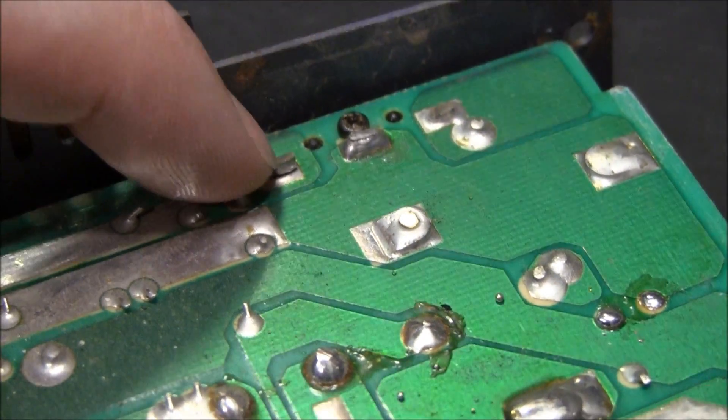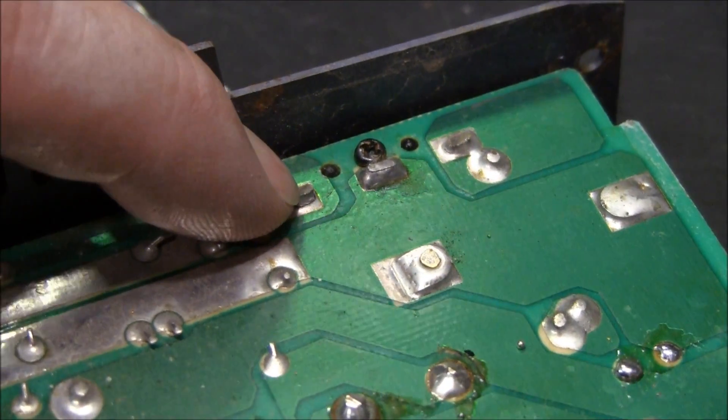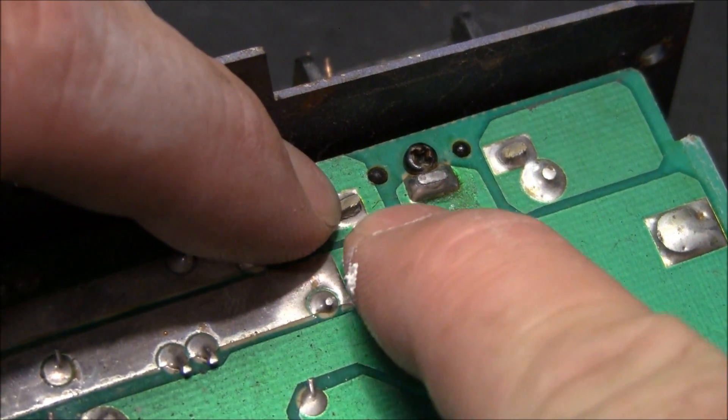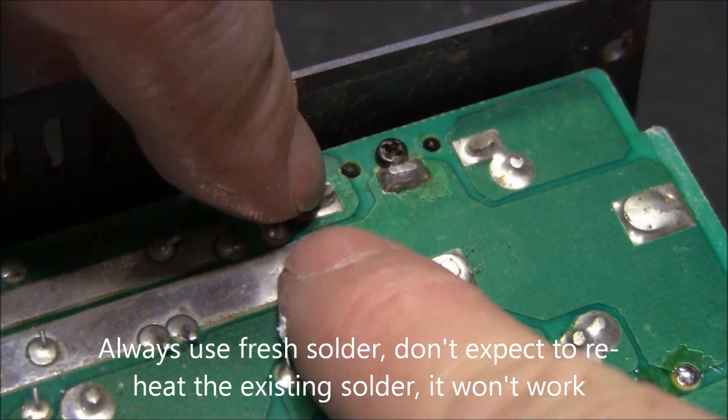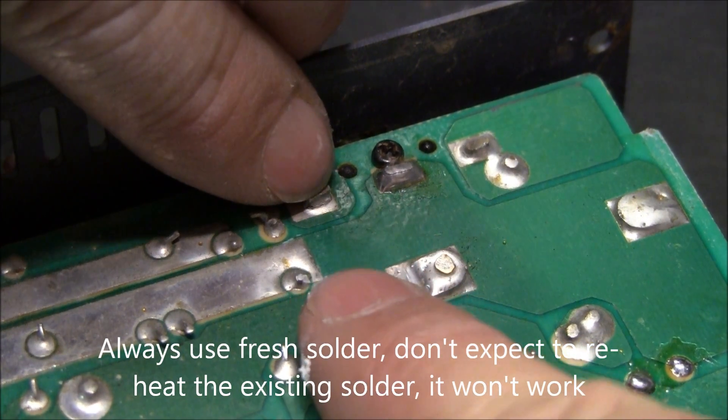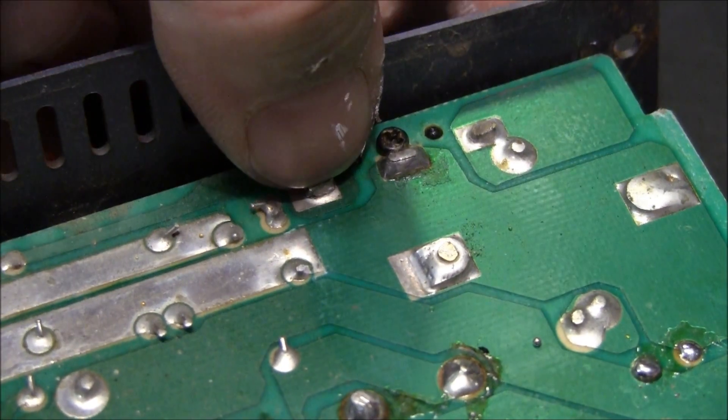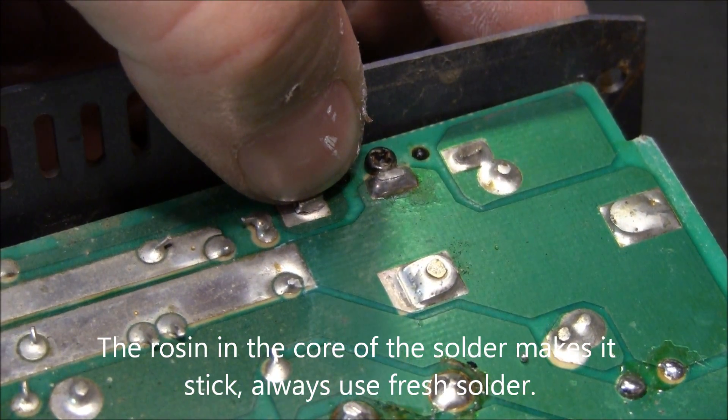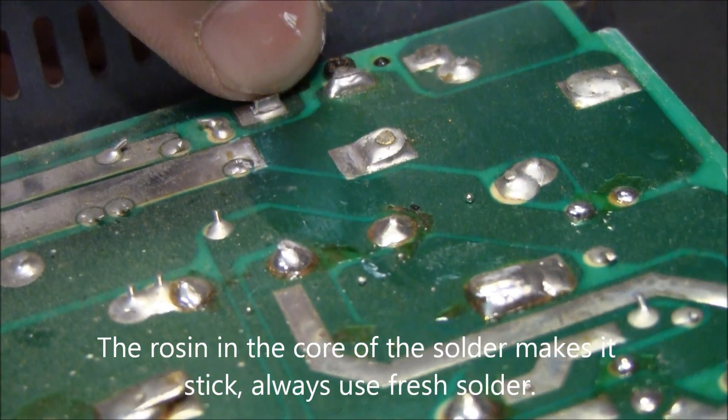A lot of times they're really hard to spot, but you'll notice that even when it's down close, there's like a little ring around it, there's like a little line. Once you see a few of them, you'll be able to detect them and know that you need to just slap some new solder on there and fix it up.